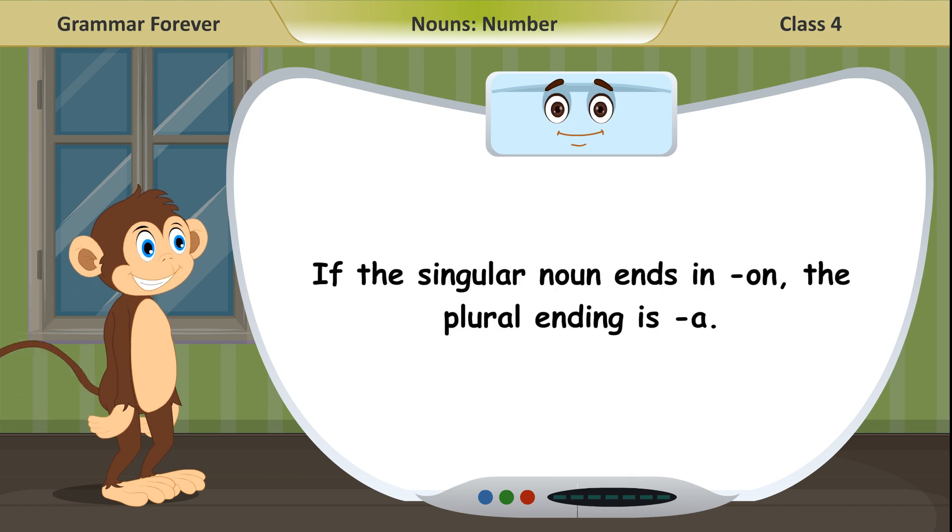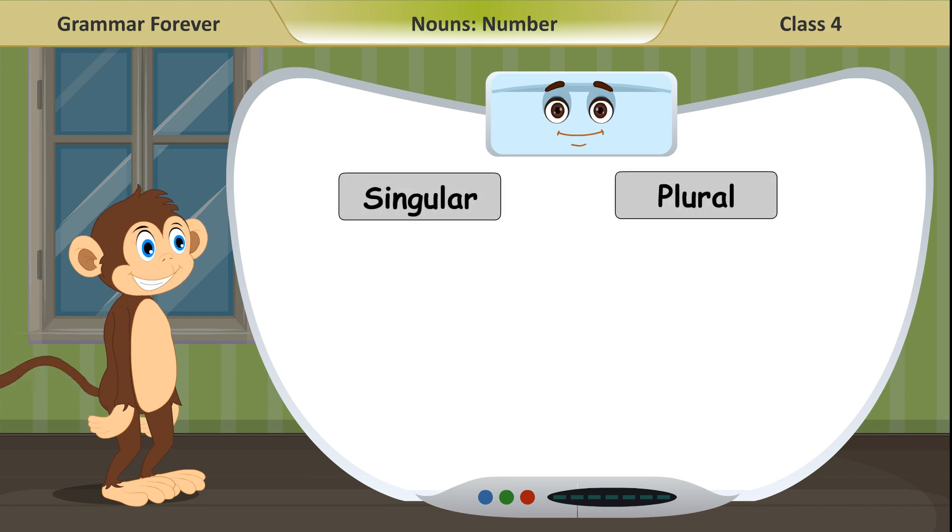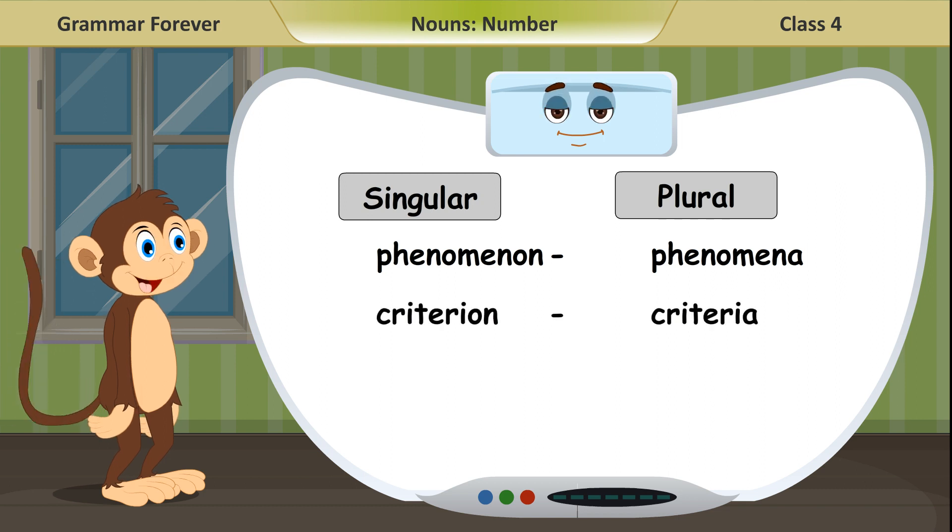If the singular noun ends in ON, the plural ending is A. Singular, plural: Phenomenon, phenomena. Criterion, criteria. Lexicon, lexica.